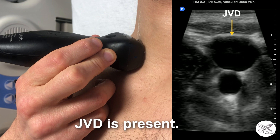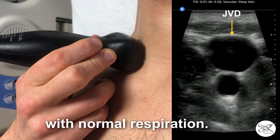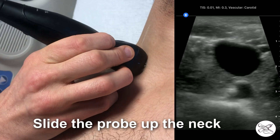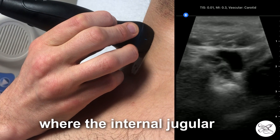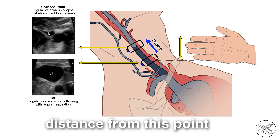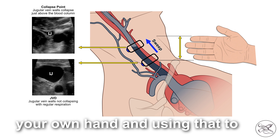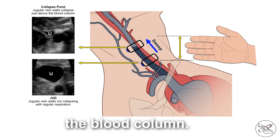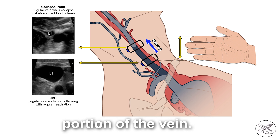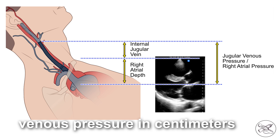In this example, JVD is present. The internal jugular vein is distended and not collapsing with normal respiration. Slide the probe up the neck to find the collapse point where the internal jugular vein vessel walls touch, then measure the vertical distance from this point down to the sternum. This can be done with a ruler, or more practically by measuring your own hand and using that to estimate the height of the blood column. This is the portion of the jugular venous pressure estimated from the visible portion of the vein. Then add this to the right atrial depth to get the jugular venous pressure in centimeters of water.